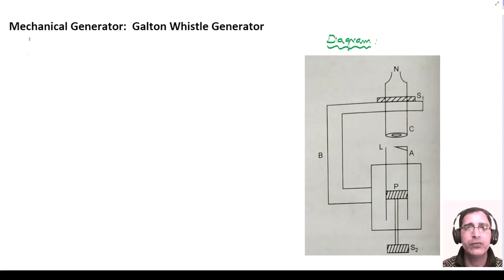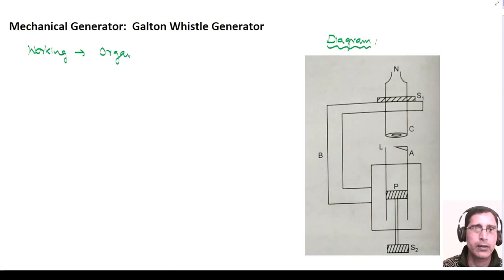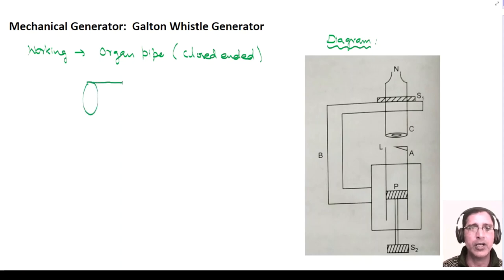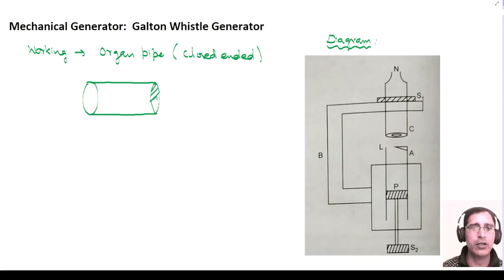If I talk about the mechanical generator, the Galton Whistle generator — its working principle is based on organ pipes. Instead of multiple pipes, I am actually taking only a single organ pipe. This is a closed-ended organ pipe: it is open at one end but closed at the other end. I have a cylindrical pipe which is closed at one end and open at the second end.